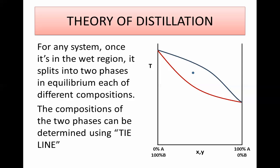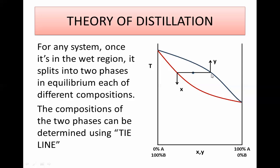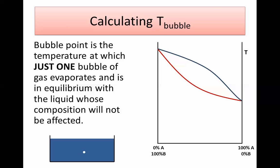Going back to the theory of distillation: if your system lies between the two curves in the wet region, it splits spontaneously into a liquid phase and a gas phase, both in equilibrium. This horizontal line is called the tie line or equilibrium line — it relates x and y, the mole fractions in liquid and vapor, at the same temperature. Your system splits into compositions y and x which are in equilibrium with each other, related by the equation y = K · x.